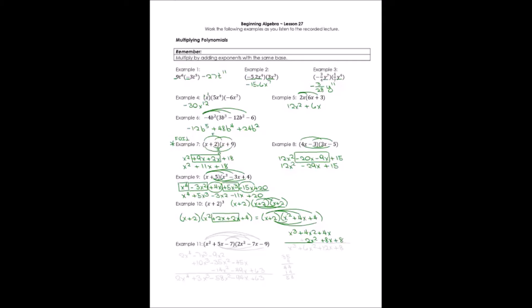Adding the terms together — combining 4x squared and 2x squared, and 4x and 8x — I end up with a 4-term polynomial with the highest degree of 3.